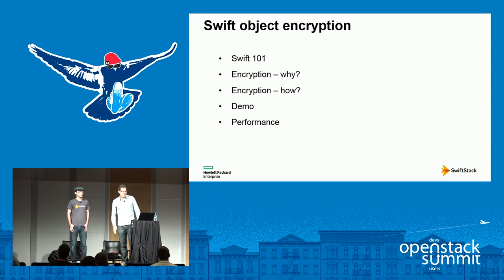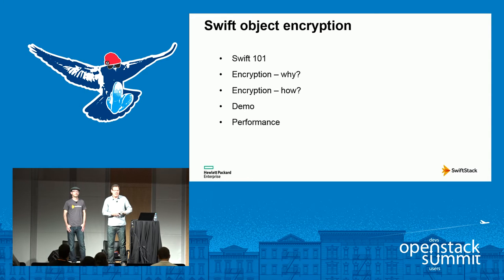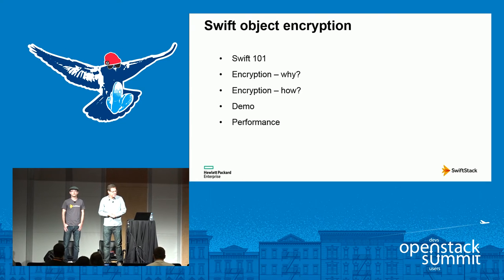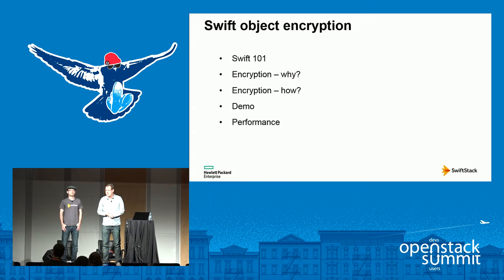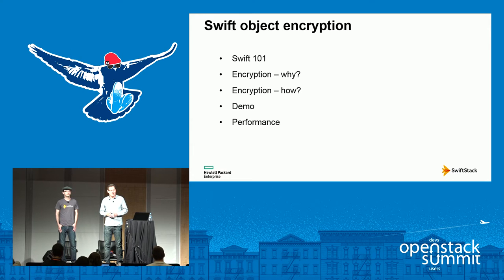My slides seem to be auto-advancing for some reason, so I'm going to pull out this clicker. Swift object encryption — we're really excited to tell you about this morning. At the last summit in Austin, myself and Janie Richling gave you a preview of this work. Since then, we have released the first version, and it's available with the Newton release. Here's what we're going to cover: why we added this feature, how it works, a demo, and performance results.